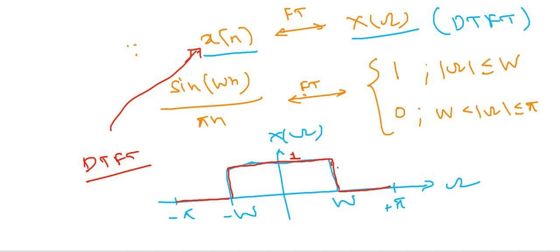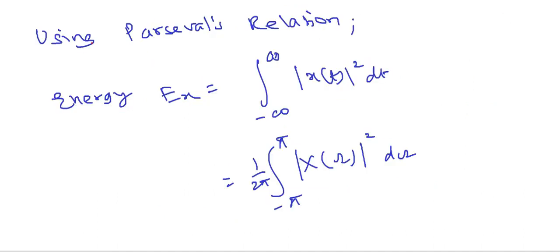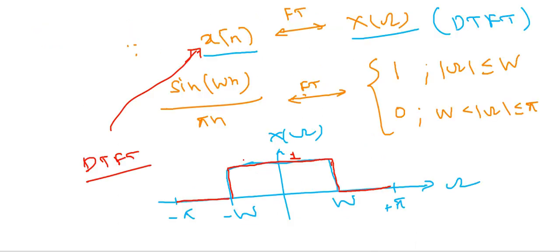So we will use this X(ω), this spectrum of x(n), to calculate the energy. And we know using Parseval's theorem we can use this formula for energy. Now we know X(ω) which is given here.